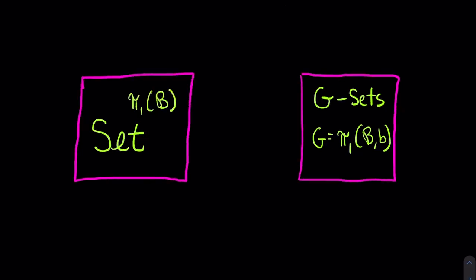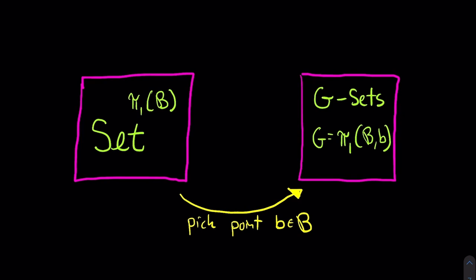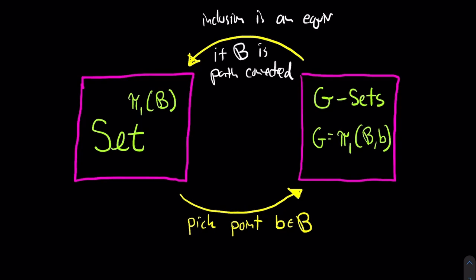Let me explain the equivalence between these three categories by describing how the two algebraic categories on the right are equivalent. If you have a functor from the fundamental groupoid into the category of sets and you pick a base point little b in your space B, you get a single set on which the fundamental group of B based at b acts. The inclusion of the single point little b into the fundamental groupoid is an equivalence of categories as long as the fundamental groupoid is connected — which is the same as saying B is path connected. That equivalence induces an equivalence from G-sets to the category of set-valued functors on the fundamental groupoid.